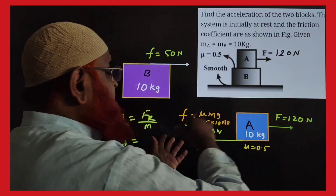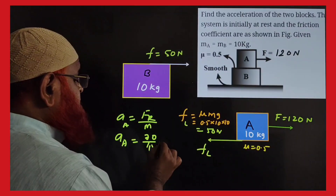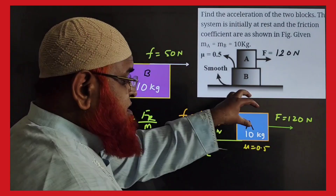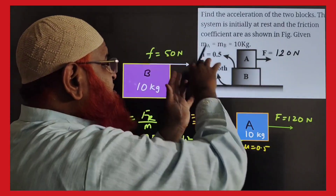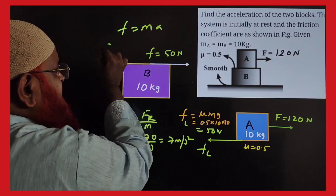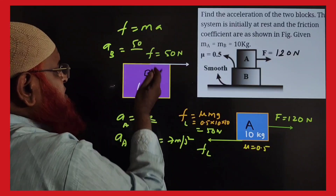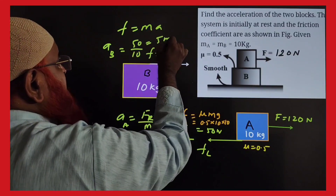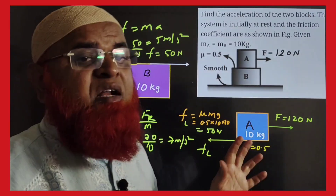The net resultant force for the upper block is 120 minus 50, which equals 70 N, divided by the mass of 10 kg, giving 7 meters per second squared for the upper block. For the lower block, the limiting friction acts as a driving force in the forward direction. So acceleration of the lower block AB equals 50 divided by 10, which is 5 meters per second squared. Upper block is 7 m/s² and lower block is only 5 m/s².